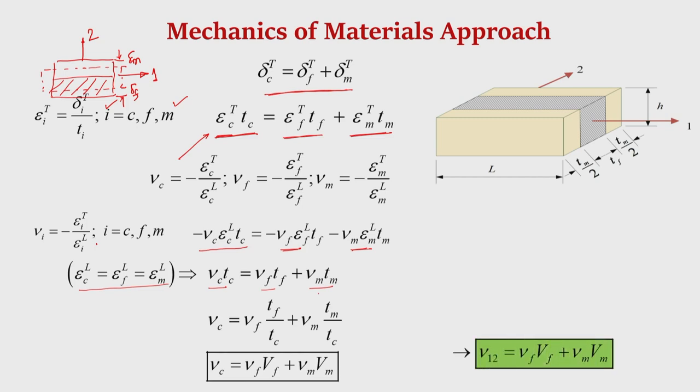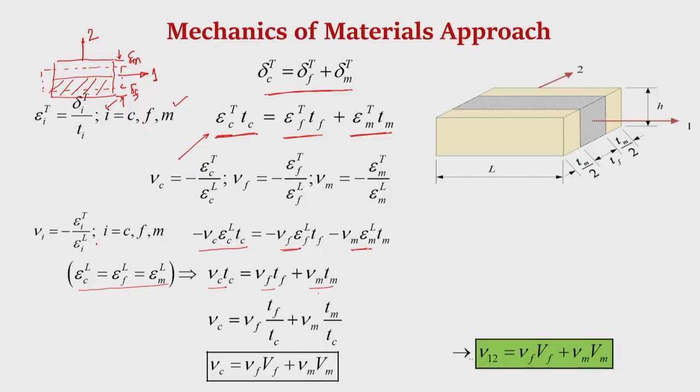Here mu_C is the Poisson's ratio of the lamina when stress is applied along direction 1 and all other stresses are zero, producing transverse deformation along 2. Therefore mu_C is nothing but nu_12. So we can write: nu_12 = nu_F × V_F + nu_M × V_M. This is similar to what we obtained for the longitudinal Young's modulus: E1 = E_F × V_F + E_M × V_M.